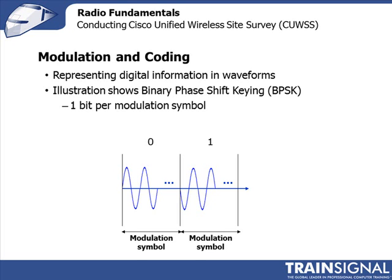To understand phase modulation, imagine holding one end of a rope and I'm holding the other. If I start the waveform by throwing my hand up, that's a zero; if I start by pushing my hand down, that's a one. If you can detect that on your end of the rope, you can distinguish between my ones and zeros. That's phase modulation — the first waveform starts by going up, the second starts by going down, which is a 180-degree phase shift. At the receiving side, you can detect and say that's a zero and that's a one. That's what we mean by phase shift keying.